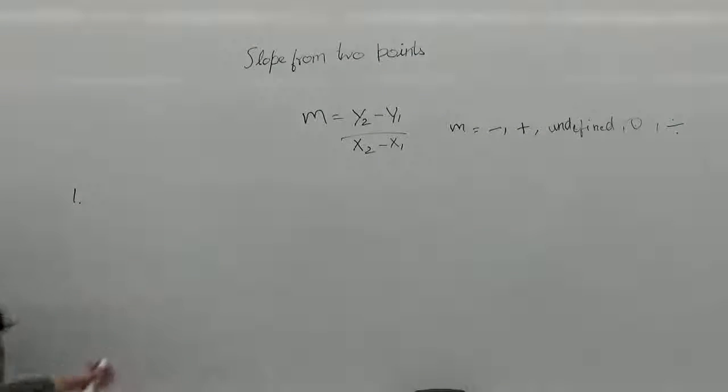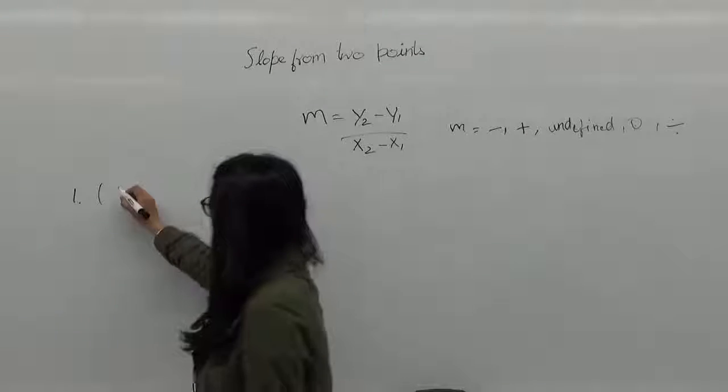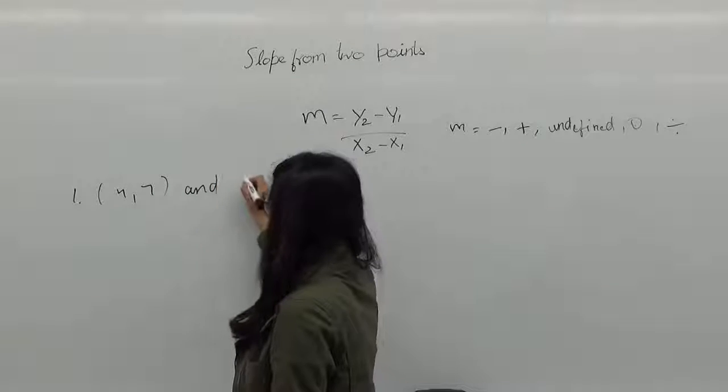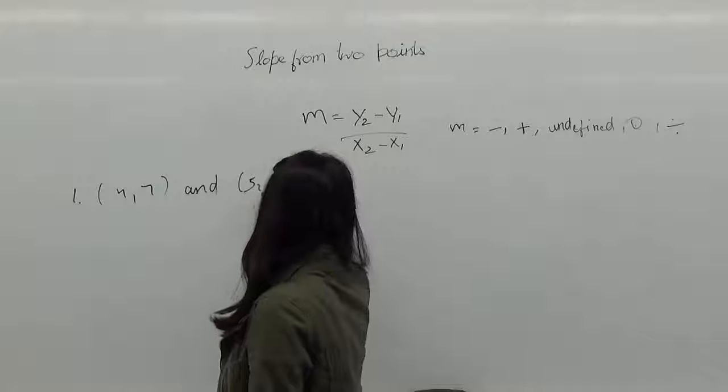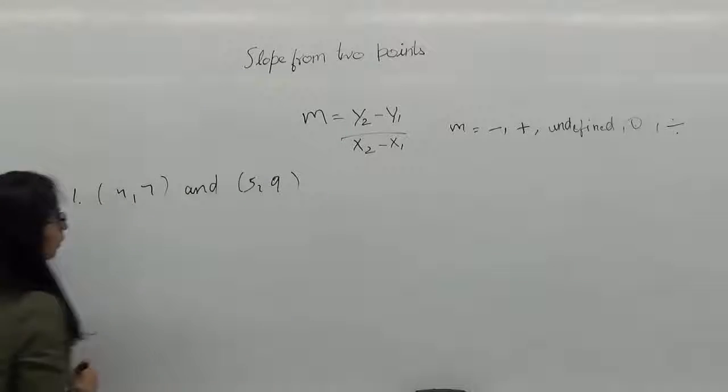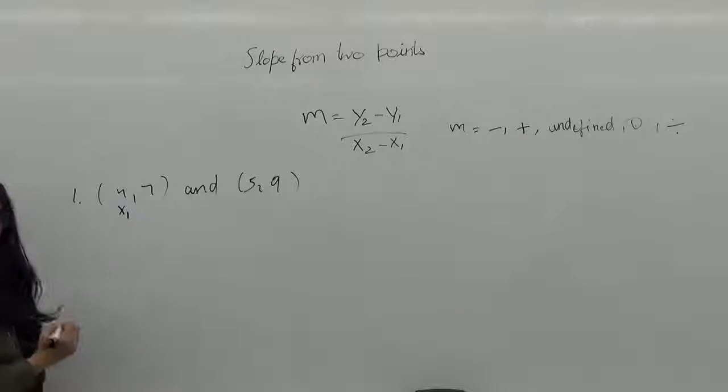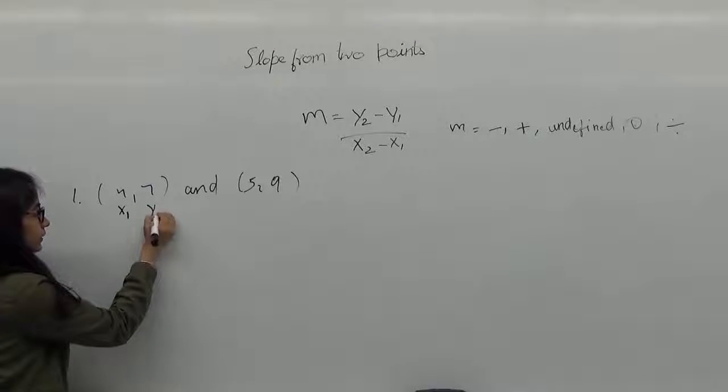So first question is find the slope for the points passing through (4,7) and (5,9). So my x1 here is 4, my y1 is 7.